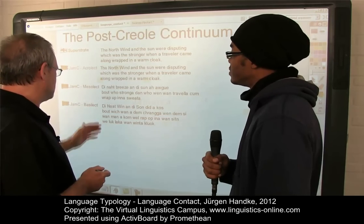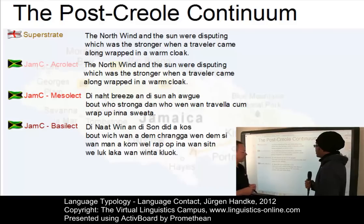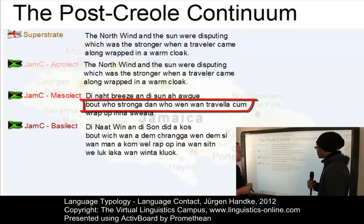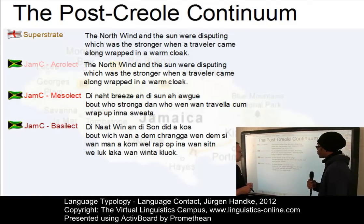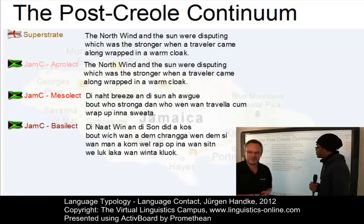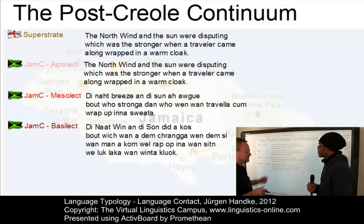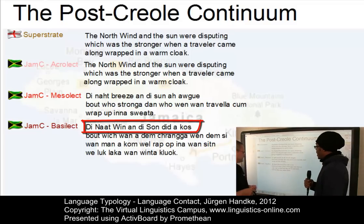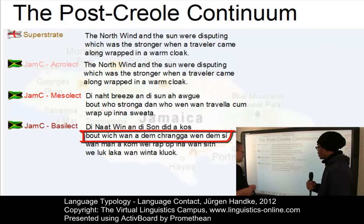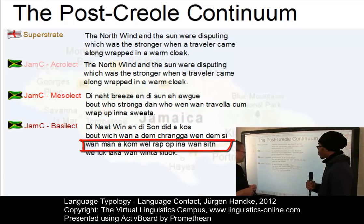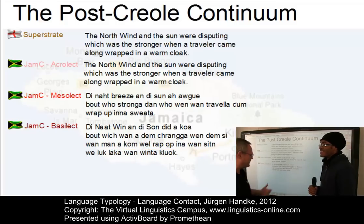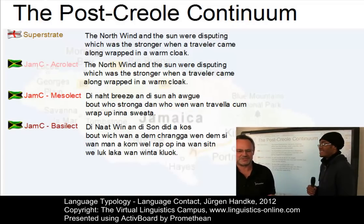Can we start with the mesolect version? 'The north breeze and the sun argue about who stronger than who, when one traveller come wrap up in one sweater.' That sounds relatively remote from English but there are some things which we can understand relatively well. And now the basilect version: 'The north wind and the sun did a curse about which one of them stronger, when them see one man come well wrap up in one sitting, or look like one winter cloak.' I didn't understand it at all, I must admit — and this is really unintelligible to me and thus a language in its own right.